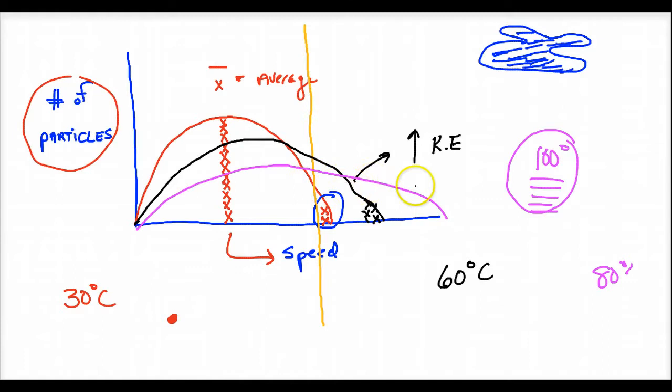But the bottom line is, we're distributing our particles. Notice there's a range of speeds. Even at 80 degrees Celsius, there's still going to be some molecules that are on the lower end of the speed going very slowly. We have mostly the average here, but you're still going to have some slow and very fast. Remember, temperature is the average motion, average kinetic.